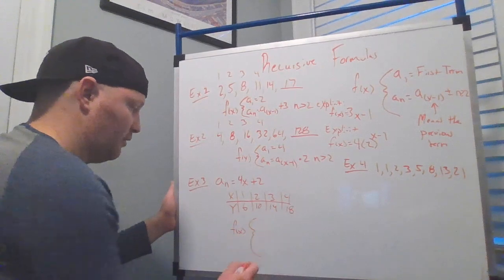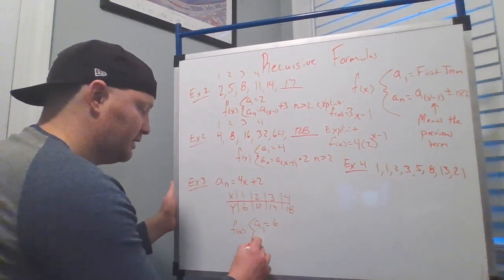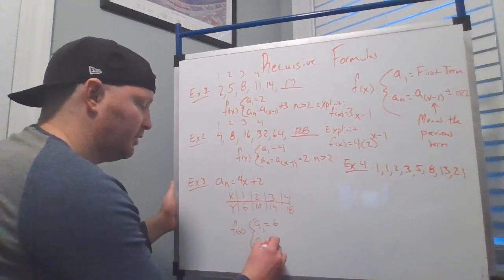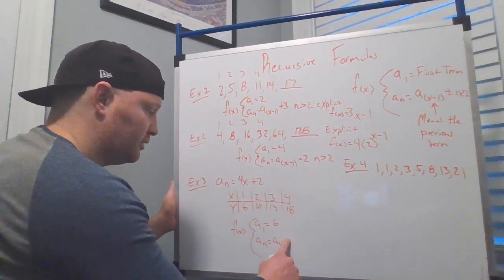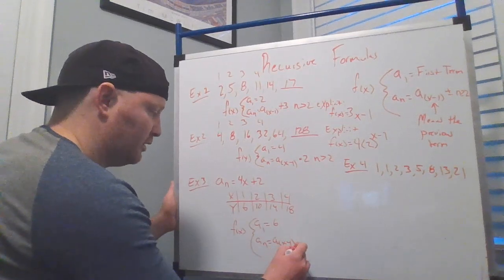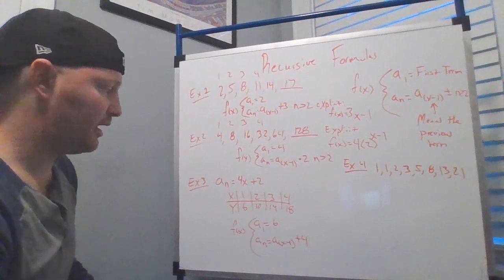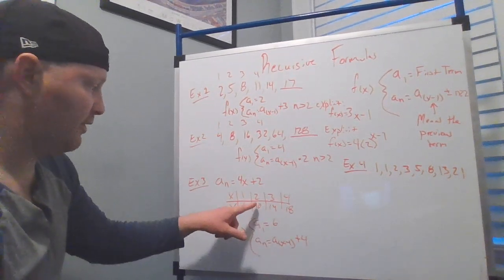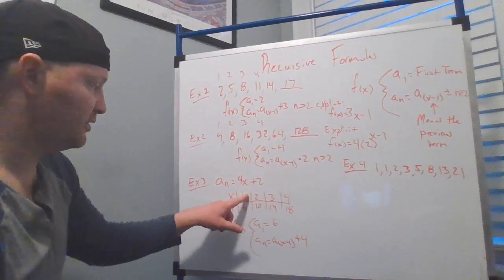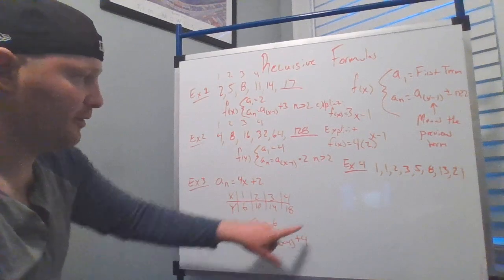Okay. What's our first term? A of 1. A sub 1 is equal to 6. To find the next term, all we do is take the previous term. A sub n minus 1. Oops. A sub n minus 1. And we're simply adding 4 to it because we are using a... We are recognizing a linear function here. And I can see that this works. If I want to find the second term, take the previous term, add 4 to it, boom. So, this explicit formula, here's the recursive formula.